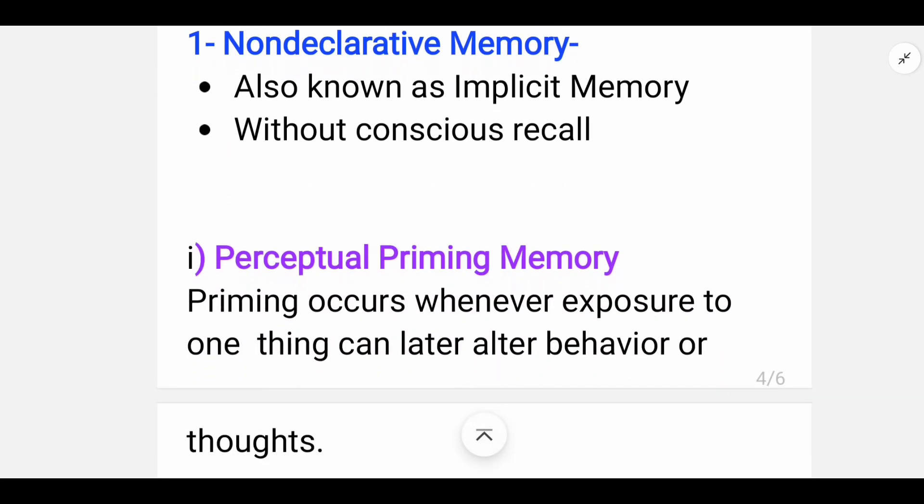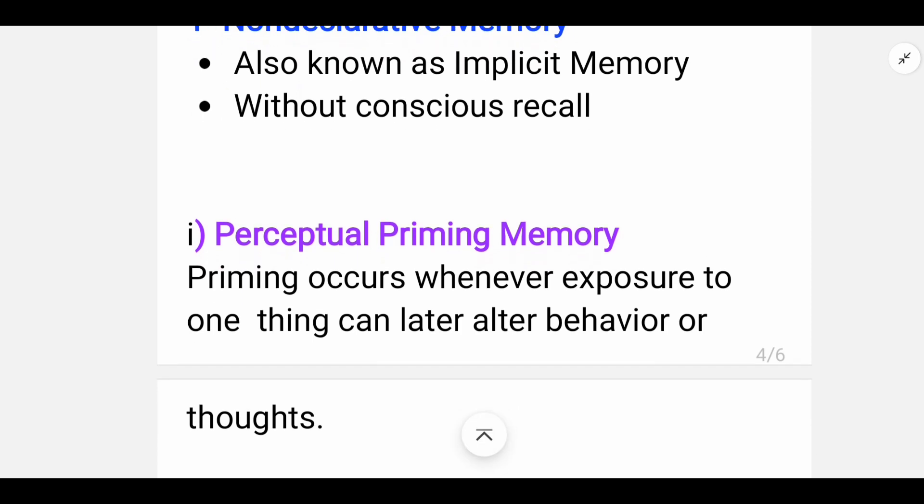Non-declarative memory has two types: perceptual priming memory and procedural memory. Perceptual priming memory means we know some information and then we have to think about it. Like if a small child goes to a park and there is a red bench and he eats chocolates there, when he sees the red bench in future, he will remember the chocolates. This is our perceptual priming memory. Priming occurs whenever exposure to one thing can later alter behavior or thoughts.